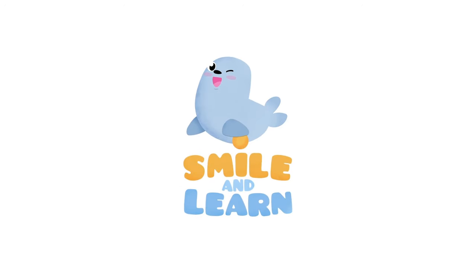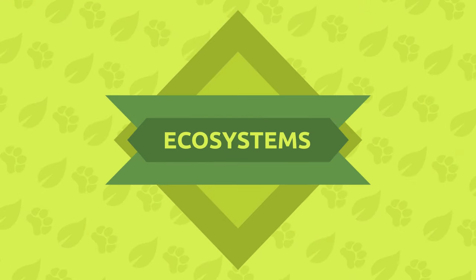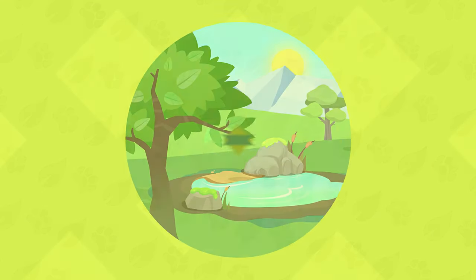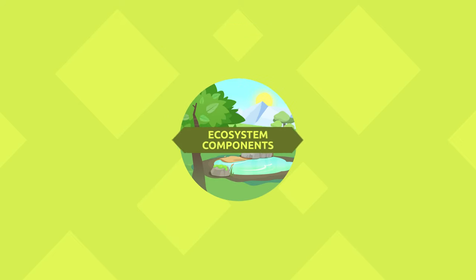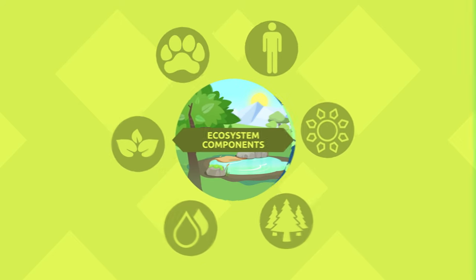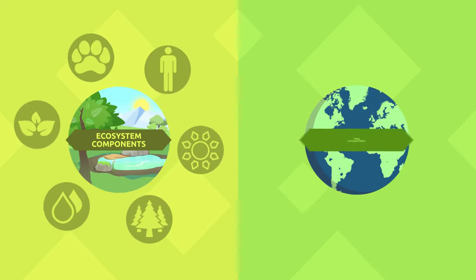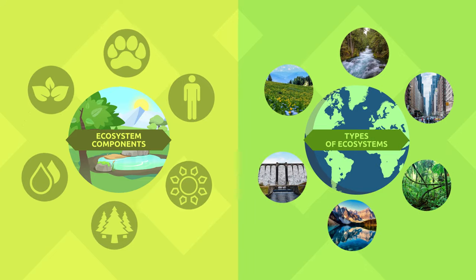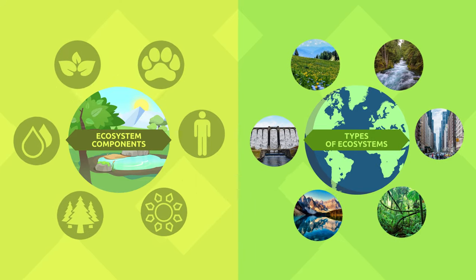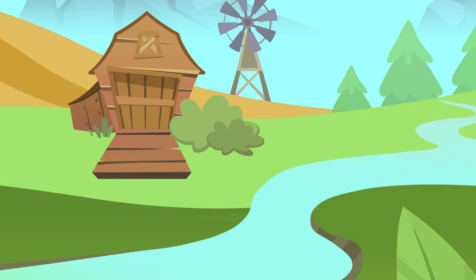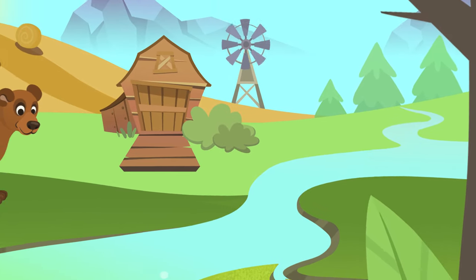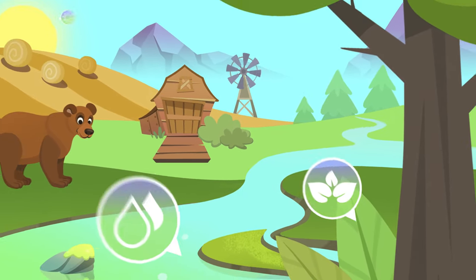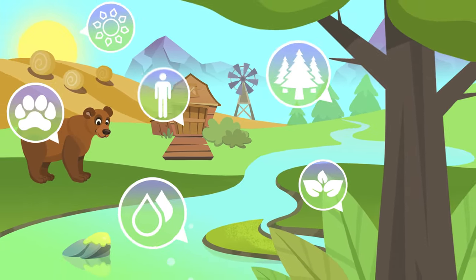Today we're going to learn what an ecosystem is, its components, and the different types of ecosystems found on Earth. An ecosystem is the community of living organisms and the natural resources of the environment in which they live.